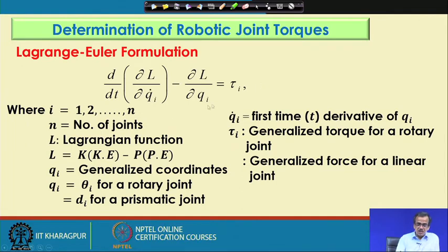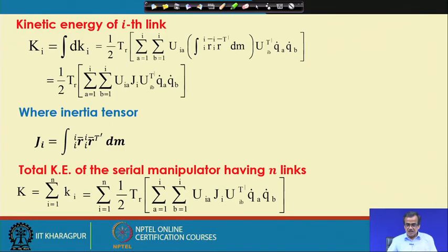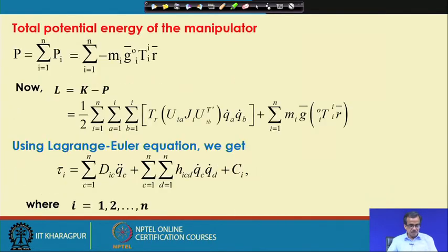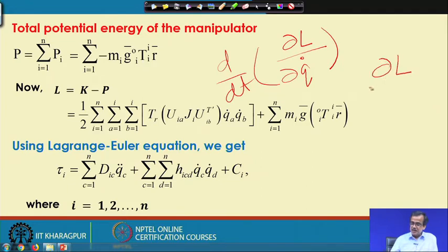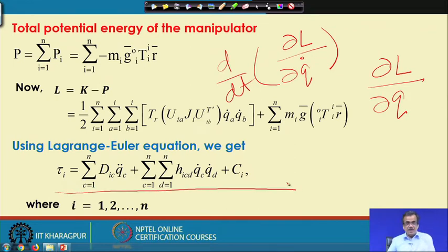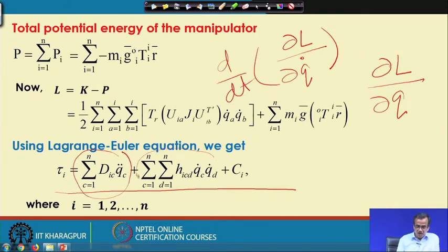Using this expression, if we substitute the Lagrangian and find out the partial derivative of L with respect to q_dot, then find d/dt of that, and separately the partial derivative of L with respect to q, we will obtain the final expression for the joint torque. In this expression for joint torque, we have three distinct components: the inertia term, which depends on the mass distribution of the link; the Coriolis-centrifugal term; and the gravity term.